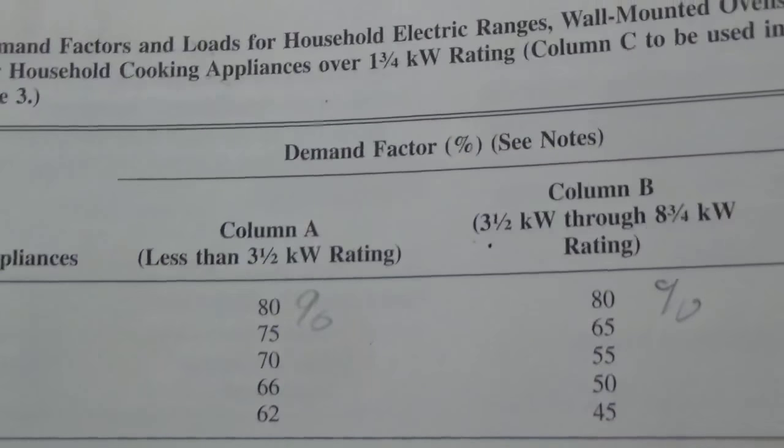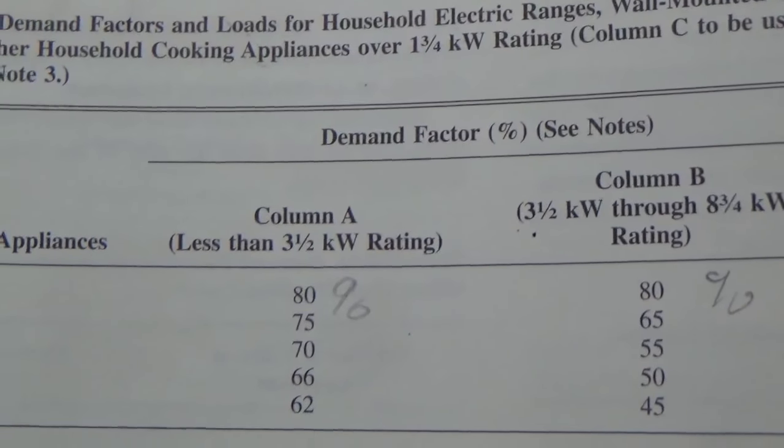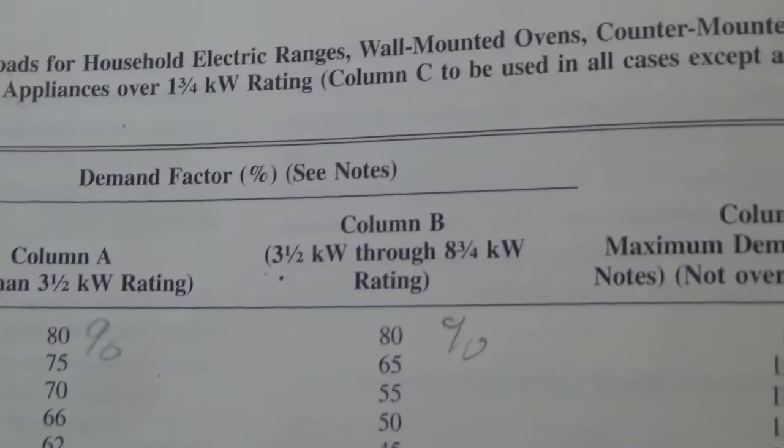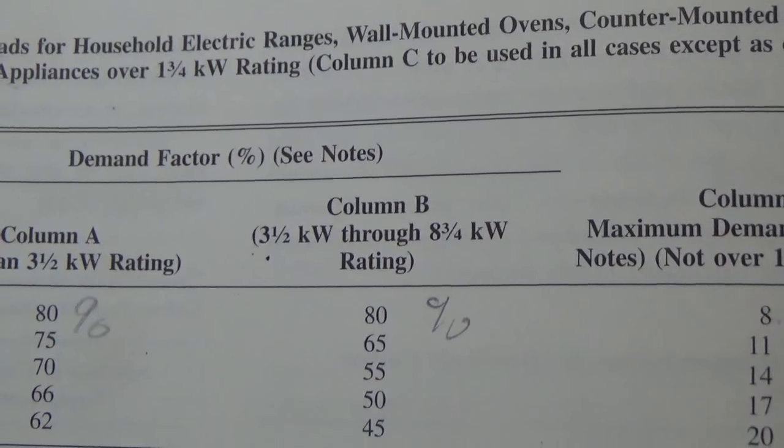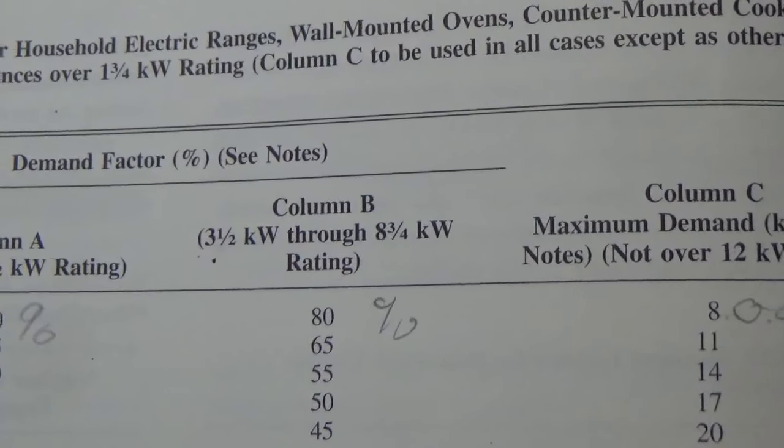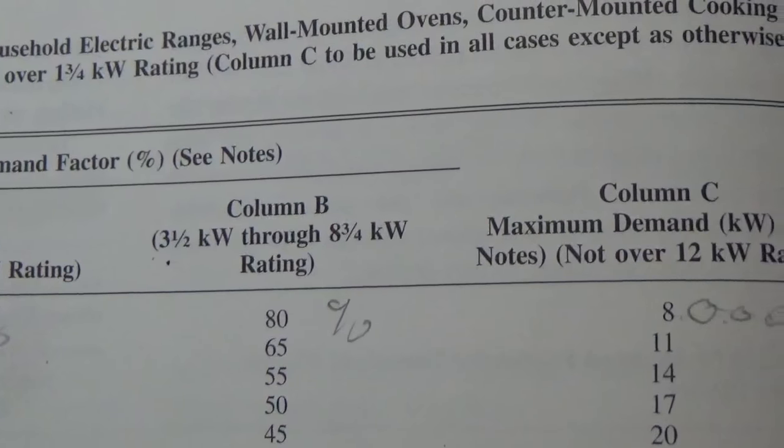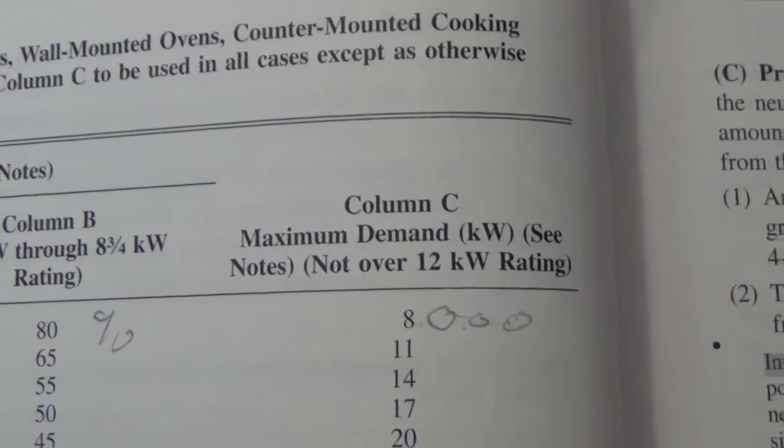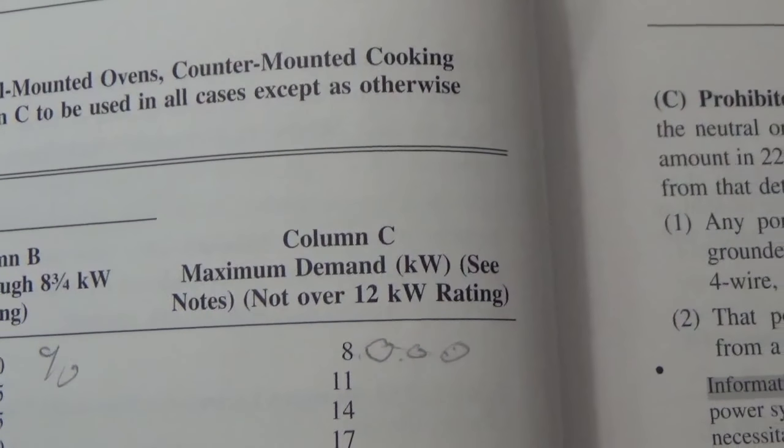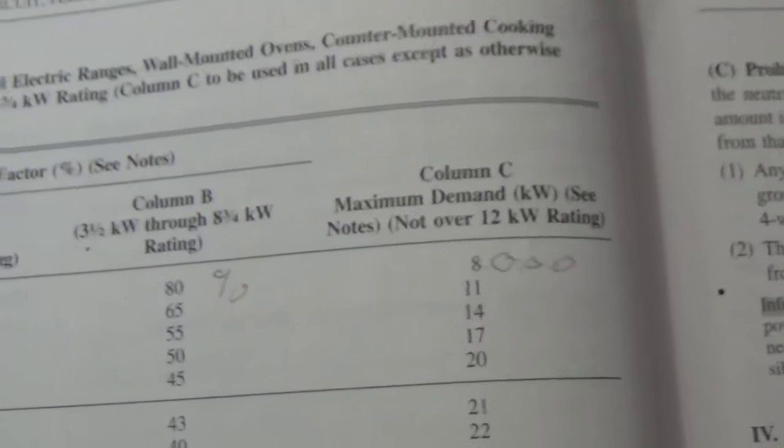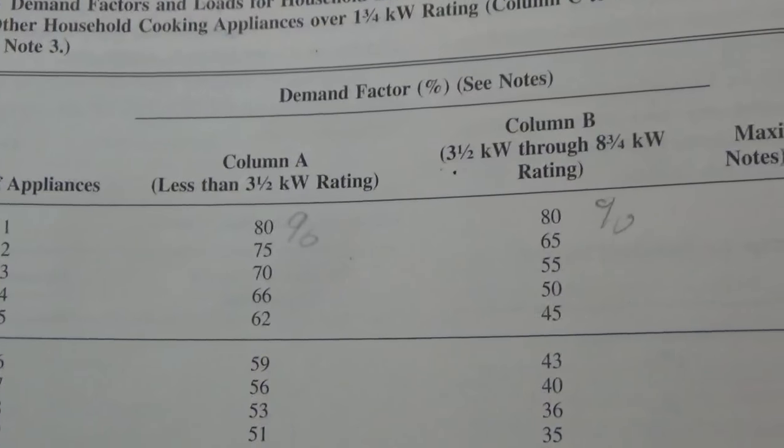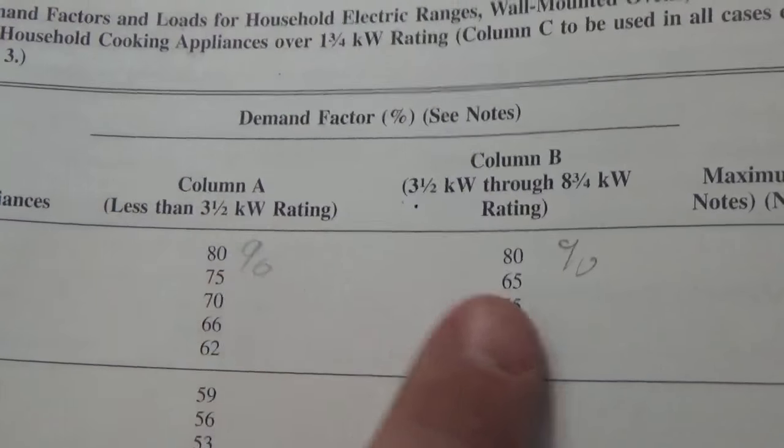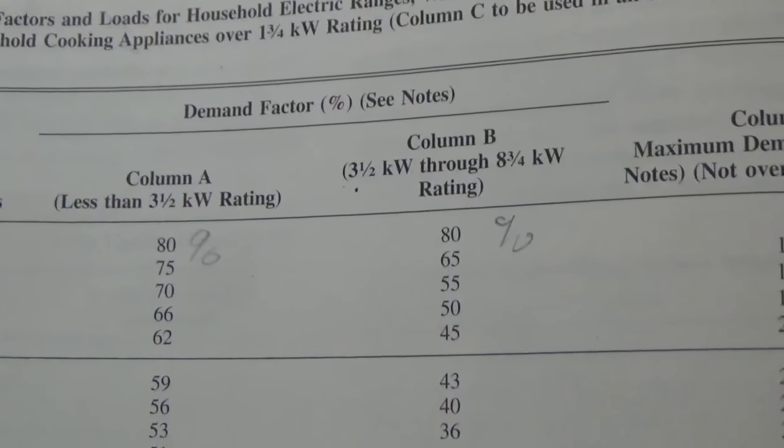Let's focus on column A: less than three and a half kilowatts rating; column B: three and a half kilowatt to eight and three-quarter kilowatt; and then column C: minimum demand kilowatt. You can see that I put percent marks in column A and column B because anything in those columns are percentages.